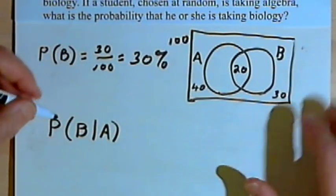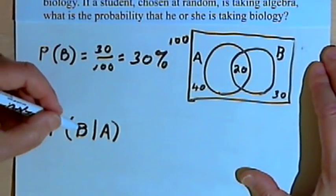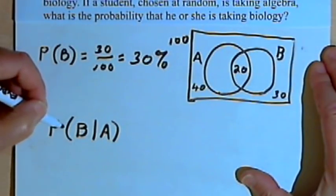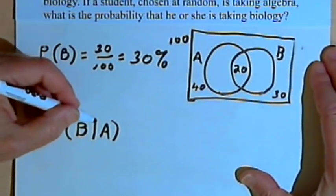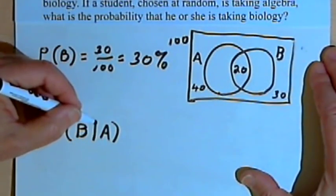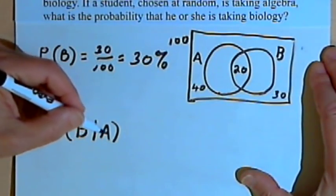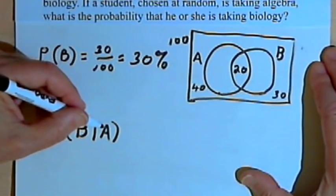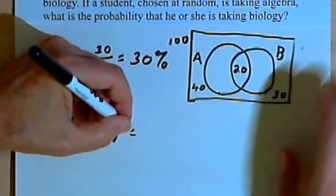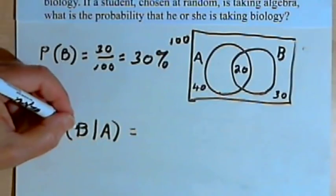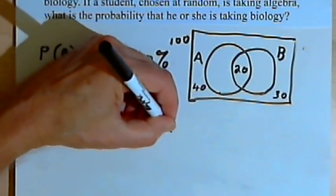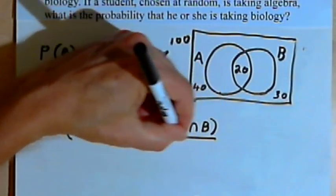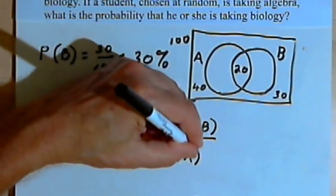Let me explain this notation. We write P(B|A) — the probability that a student is taking biology, given that we already know the student is taking algebra. The bar means 'given that.' The formula is that the probability of B given A equals the probability of the intersection of A and B, divided by the probability of A.